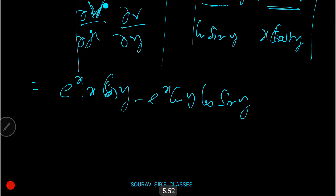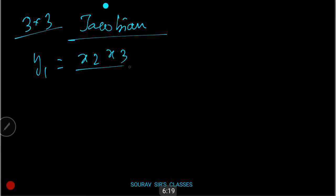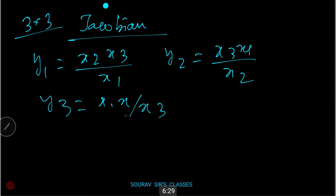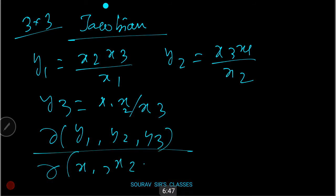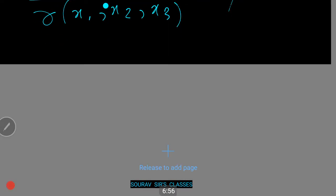Now I am proceeding to a more advanced 3×3 Jacobian. It is given that y1 = x2·x3/x1, y2 = x3·x1/x2, and y3 = x1·x2/x3. You have to show that the Jacobian of y1, y2, y3 with respect to x1, x2, x3 equals 4. This time we will get a perfect value.